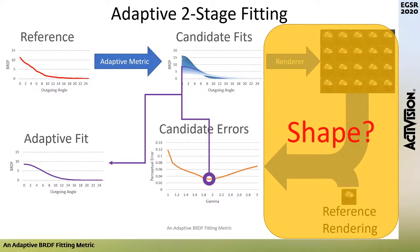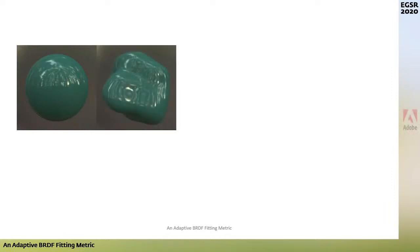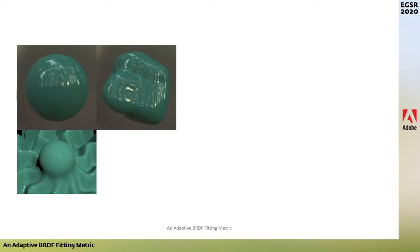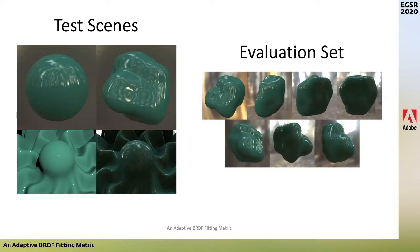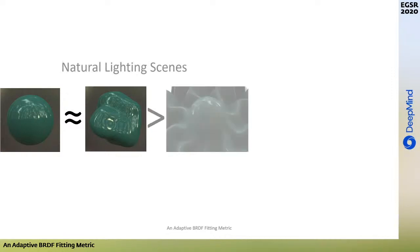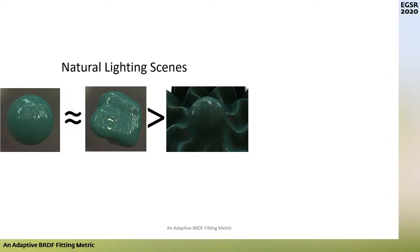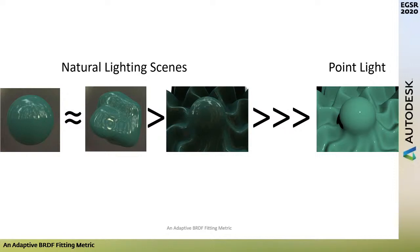Now let us consider the question of shape. We tested four shapes: the sphere, the blob from Vangorp et al., the Havren et al. shape under point lighting, and their shape under natural lighting. We evaluated using seven other rotations of the blob under the same lighting. The blob and sphere performed similarly. The Havren et al. shape under natural lighting consistently performed a bit worse — we conjecture it is because grazing angles are hidden. The Havren et al. scene with point lighting did not perform well at all. We conclude that shape is far less important than natural lighting. We chose the sphere — easier to render, invariant to rotation, and easier to replicate.